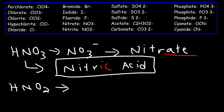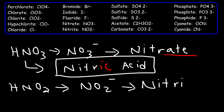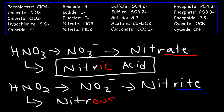HNO2 has the polyatomic ion nitrite. When you see the suffix '-ite', you need to replace it with '-ous'. So HNO2 is nitrous acid.